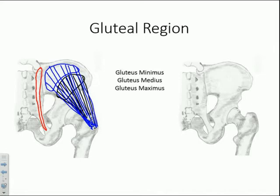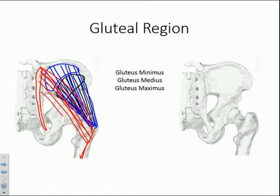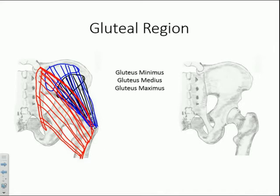The gluteus maximus attaches into the iliotibial band and the gluteal tuberosity of the femur. The attachment is more inferior and doesn't reach all the way up to the iliac crest. In anatomy lab, you can find that superior border and, above it, palpate the gluteus medius, which is important for certain clinical diagnostic tests. The gluteus maximus is the most powerful extensor of the hip and pound for pound is the most powerful muscle in the entire body.